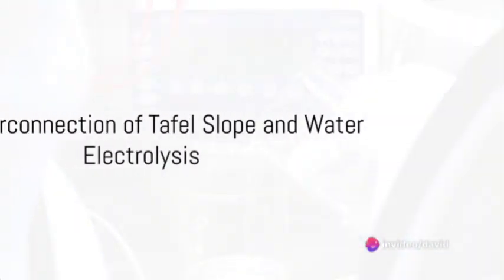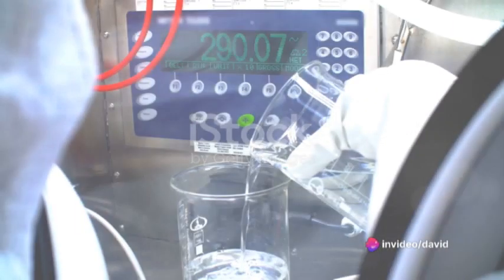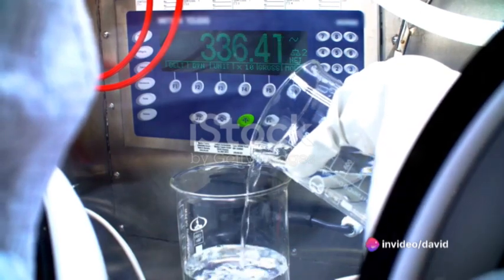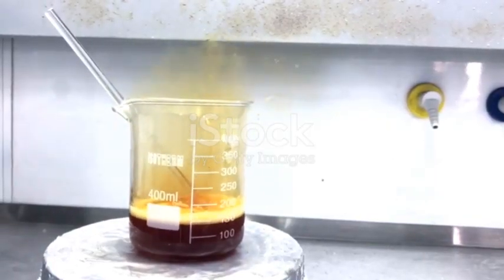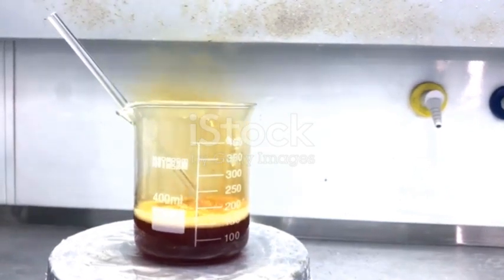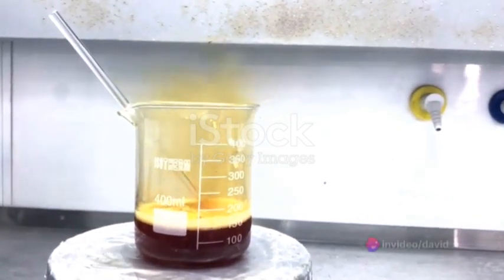In a nutshell, the Tafel slope and water electrolysis are interconnected concepts in the field of electrochemistry. The Tafel slope provides a quantitative measure of how the rate of an electrochemical reaction changes with the applied voltage.